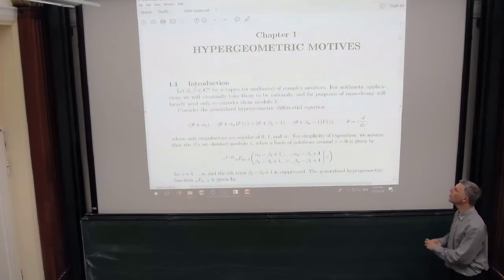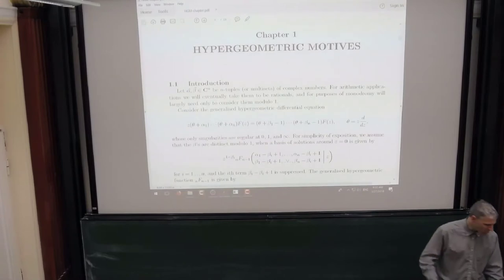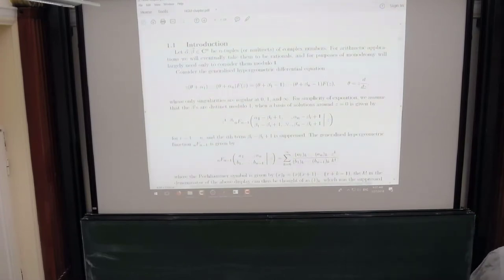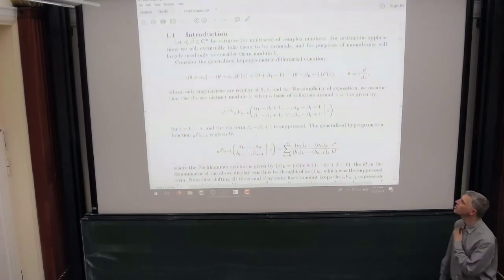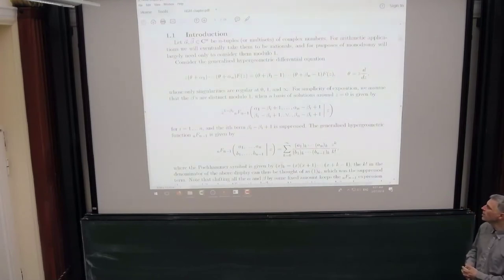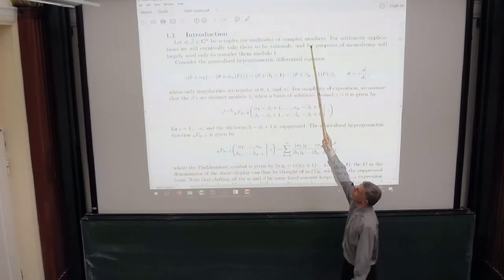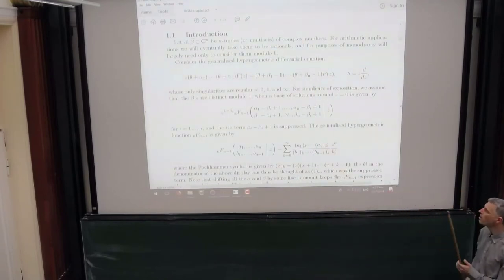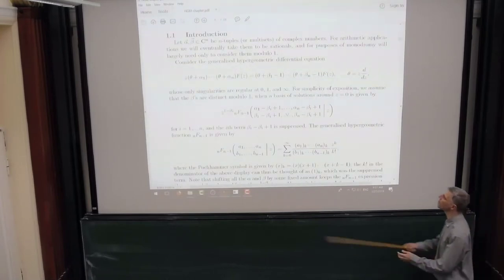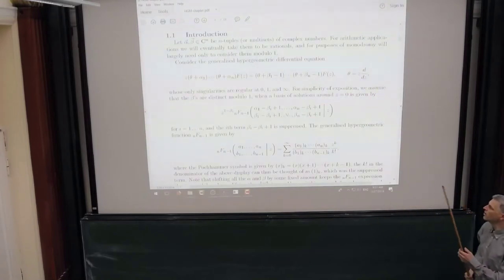The word 'motive' here is conjectural in most cases, so for motivation we'll look at hypergeometric differential equations. What are hypergeometric differential equations? The easiest case was done by Gauss and probably Euler: 2F1. In general we take N-tuples that can be complex numbers, and when we get to arithmetic applications we'll want to take these to be rationals.